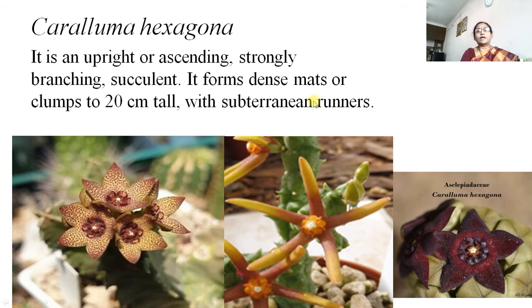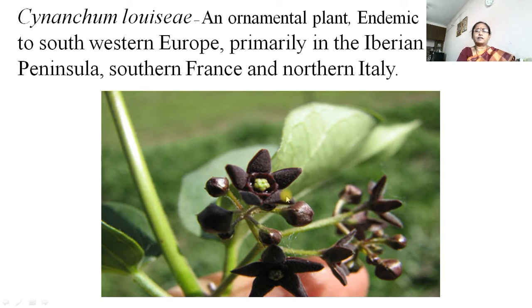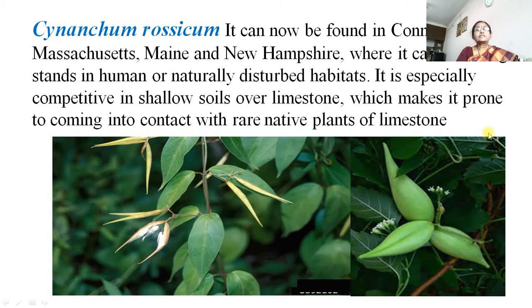Caralluma hexagona — 'hexagona' means six, so a six-sided structure is there. It is an upright and ascending, strongly branching succulent plant that forms a dense mat or clump of 20 cm tall with subterranean rubber or runners. Cynanchum lucidum is an ornamental plant found in Europe, similar to Calotropis gigantea and Calotropis procera, with very dark brown flowers that are very beautiful, used as a medicinal ornamental plant.